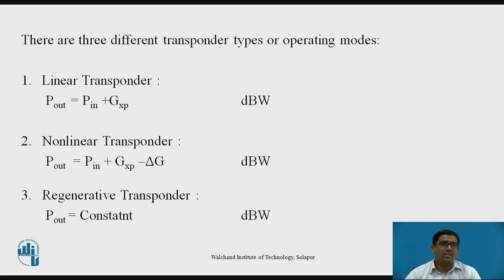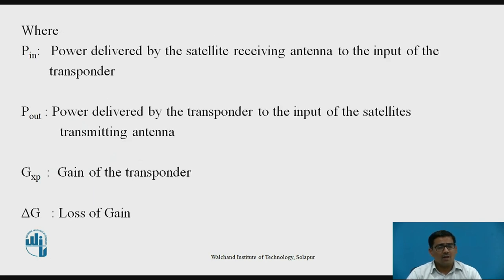The first, linear transponder: P_out = P_in + G_xp, unit is dBW. Second, nonlinear transponder: P_out = P_in + G_xp - Δg, unit is dBW. Third, regenerative transponder: P_out = constant, unit is dBW. Where P_in is power delivered by satellite receiving antenna to the input of the transponder, P_out is power delivered by transponder to the input of satellite transmitting antenna, G_xp is gain of the transponder, and Δg is the loss of gain.